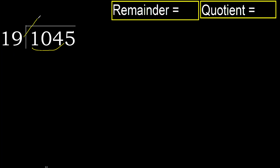19 multiplied by which number is nearest to 104 but not greater? 19 multiplied by 6 is 114, which is greater. Multiply by 5 — 95 is not greater, ok.